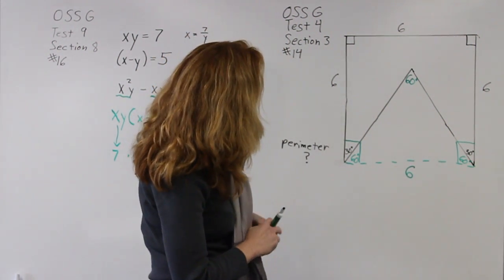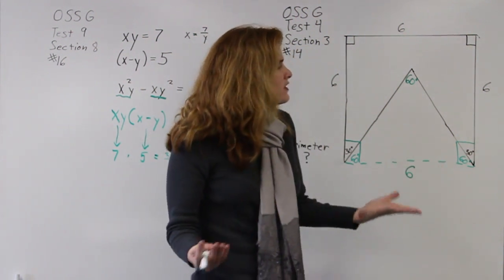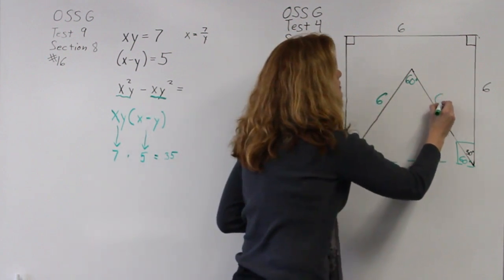So that's giving me a bit of a gift here because I know that this side is six. Well because all sides are equal, that means all the other sides of the triangle are going to be six as well.